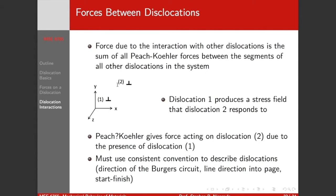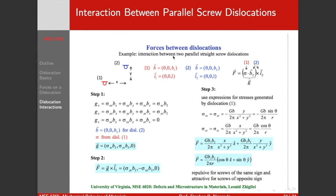The Peach-Koehler equation gives us the force acting on dislocation two due to the presence of dislocation one. We have to be careful that we use a consistent convention to describe directions of the Burgers circuit, the line direction, start and finish and all that. But if we do that, we can compute the interaction. The most straightforward interaction is between parallel screw dislocations.